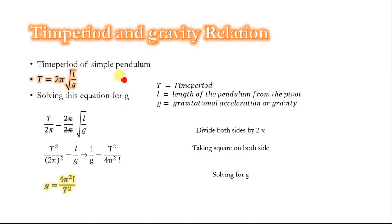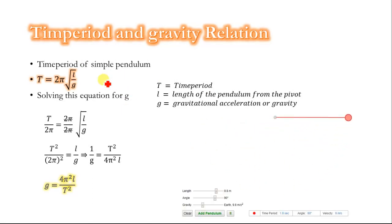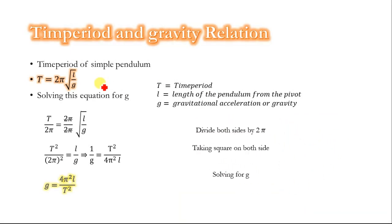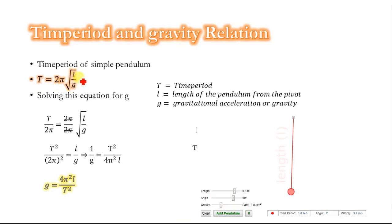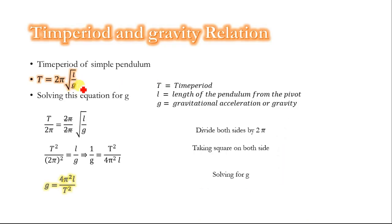The time period of a simple pendulum is defined as the time taken to complete one oscillation and is given by the formula T = 2π√(l/g), where l is the length of the pendulum and g is the gravitational constant. We will solve this equation for the value of g.